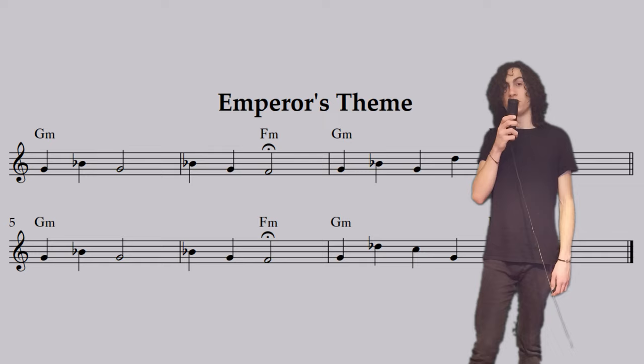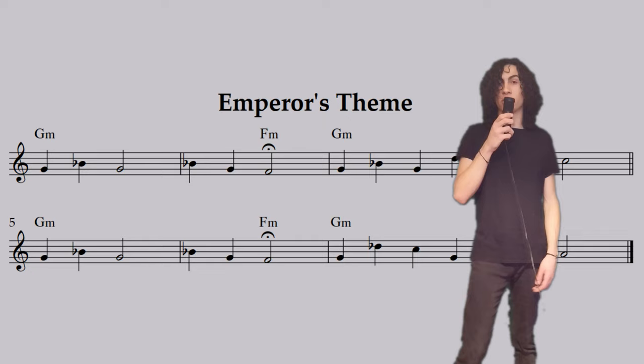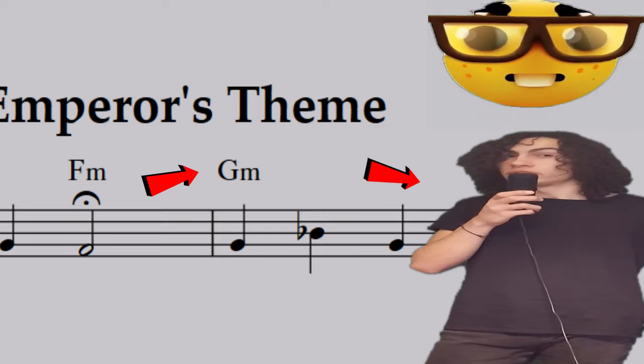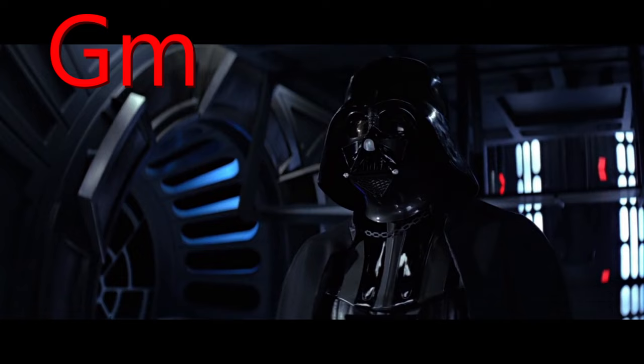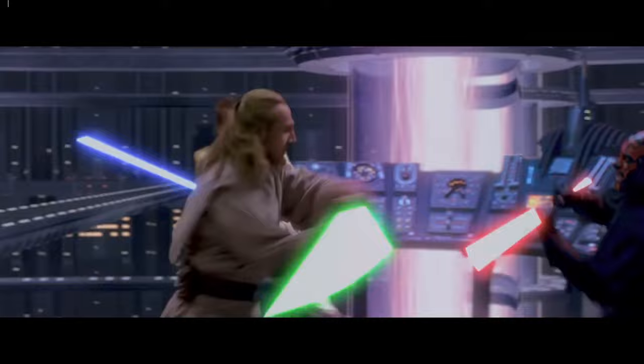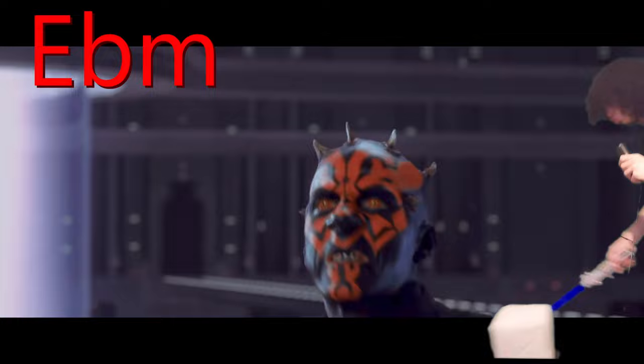Anyway, getting back to this guy — his theme actually uses a set of chords very characteristic of the dark side. That being a parallel movement of unrelated minor chords, which basically means it moves the same thing up and down, but in a weird way. And that's the same thing Vader's theme does.